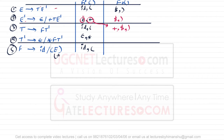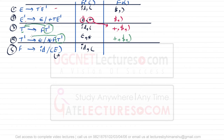Don't worry, it will become very clear by the end of these videos. Next is T'. To find FOLLOW of T', look at the right-hand sides of all productions for where T' appears. T' appears in two locations. In both cases nothing follows T', so whatever is the FOLLOW of T is also the FOLLOW of T'. Hence, FOLLOW of T' is plus, dollar, and closing bracket.